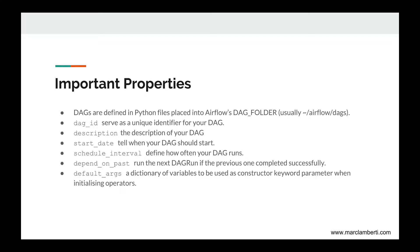Before we start coding, let's review some important properties that Apache Airflow gives you to configure your DAG. DAGs are defined in Python files located in the Airflow DAG folder — by default the 'dags' folder — which is a configurable property in the airflow.cfg file. The other properties have to be set during the creation of your DAG. The DAG ID serves as a unique identifier of your DAG — it is basically its name. The description is simply the description of your DAG, and you can type whatever you want in it.